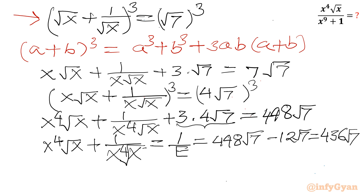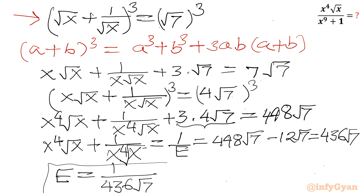Now this is not our final answer — our answer is e, so I will take the reciprocal. Therefore e equals 1 over 436√7. We can rationalize the denominator by multiplying numerator and denominator by √7, which gives √7 over 3052. And this is our final answer.